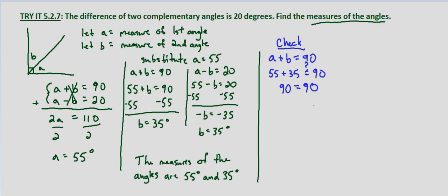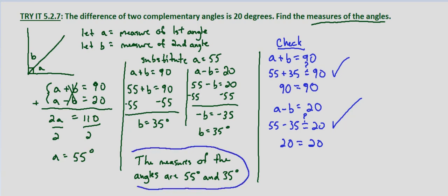Now does A minus B equal 20? So does 55 minus 35 equal 20? And yes 55 minus 35 does equal 20. So our solution checks in both equations and we can say that the measures of the two complementary angles are 55 degrees and 35 degrees.